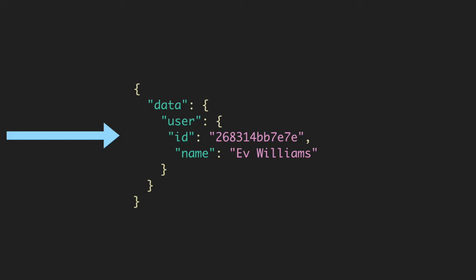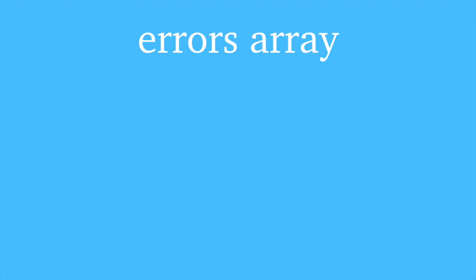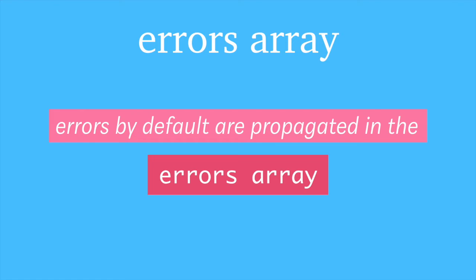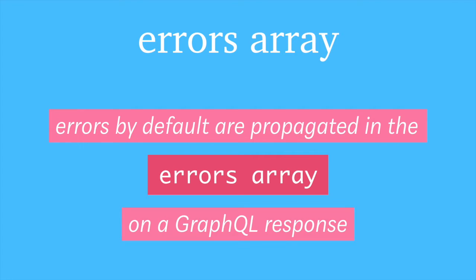So what happens when we don't get what we want? We're asking for a user and the user isn't there. Well, canonically in GraphQL, all errors are stored by default in the errors array. That's just kind of where they go. This is what happens when you start using GraphQL for the first time — this is where you can expect them to be. All the errors end up here.